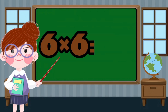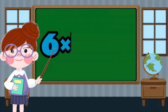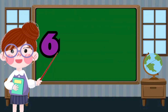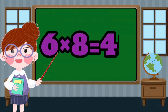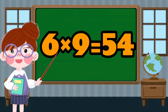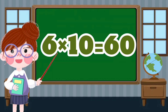6 x 6 equals 36. 6 x 7 equals 42. 6 x 8 equals 48. 6 x 9 equals 54. 6 x 10 equals 60.